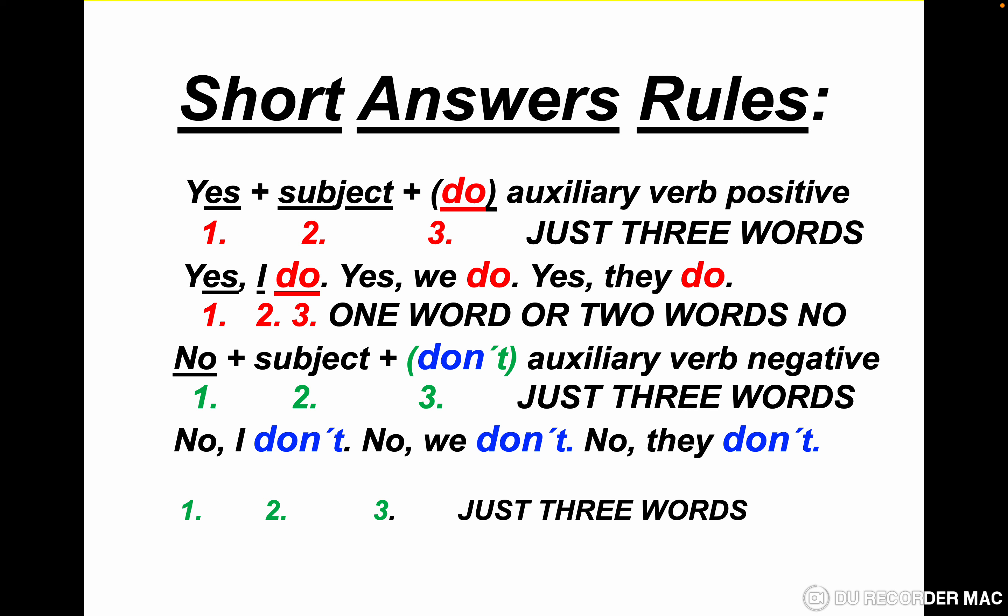The problem students have is that they answer just with one word — they say yes or no. Sometimes they say yes, I — no. You need to answer with three words, just three words. One word is not a good answer. Two words is not a good answer. In the negative form, we have no plus subject plus don't — auxiliary verb negative. In real sentences: no, I don't; no, we don't; no, they don't. Just three words. In the word 'don't' we have two words, but we consider it as one word.